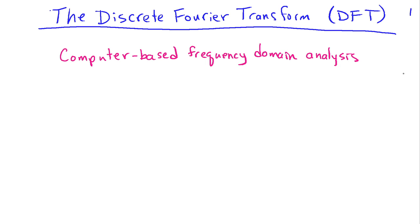The discrete Fourier transform, or the DFT, is used for computer-based frequency domain analysis. Just like we've used the Fourier transform to analyze signals and systems in the frequency domain, that's typically a pencil and paper type or analytical analysis, we use the DFT for analyzing things in the frequency domain with computers.